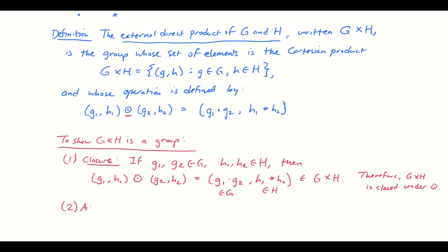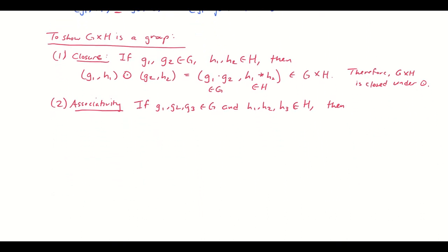Number two, associativity. Well, let's suppose that I have three elements. g1, g2, g3 belonging to G. And h1, h2, h3 belonging to H. Then, well, what do we got? If I take (g1,h1), and I think at this point, I'm just going to compose elements without writing circle dot. If I stick two of these together, you could probably infer that I'm operating using the operation circle dot. So the question is, is this equal to (g1,h1) times the product (g2,h2)(g3,h3)?